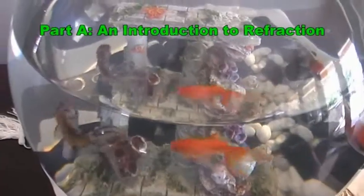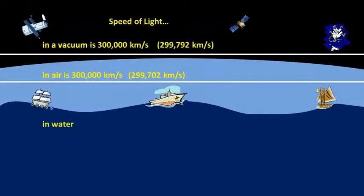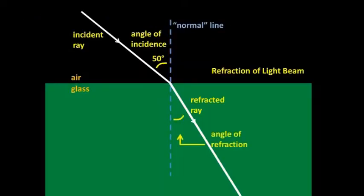In part A, we introduce students to refraction. We explain that refraction is the changing of a light beam's direction when it passes from one material to another. It occurs because light travels at different speeds in different substances.